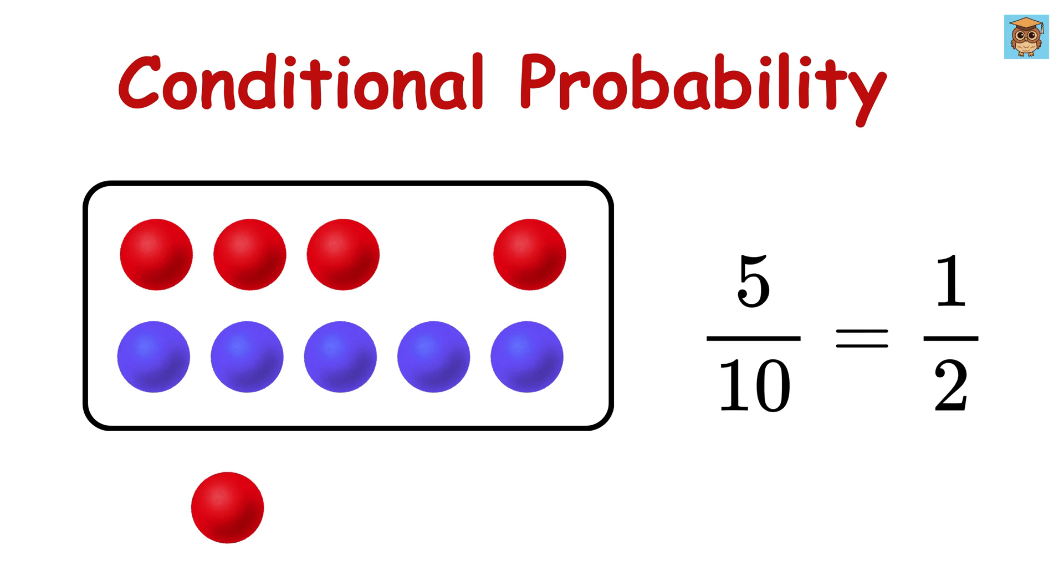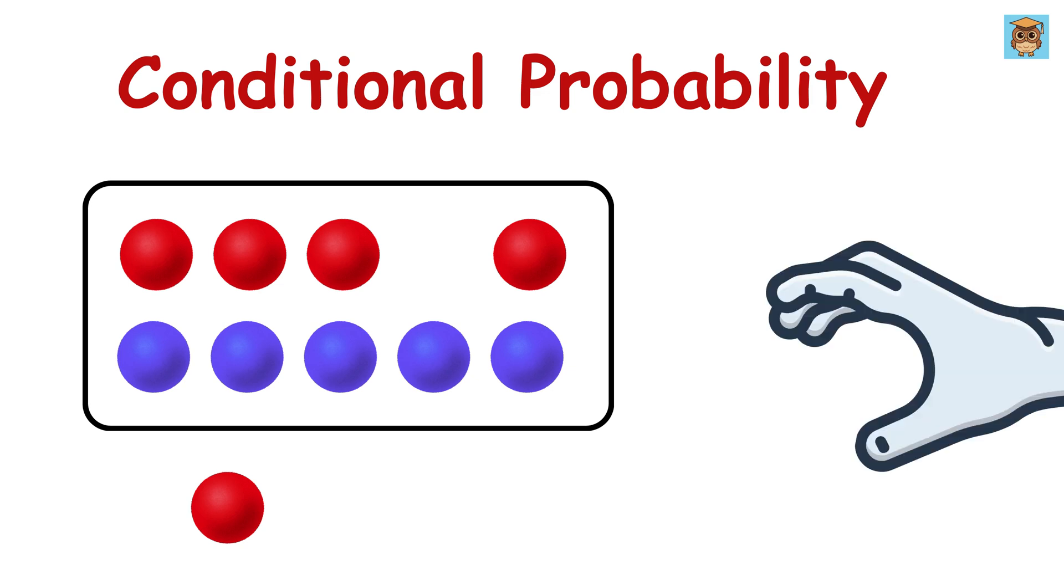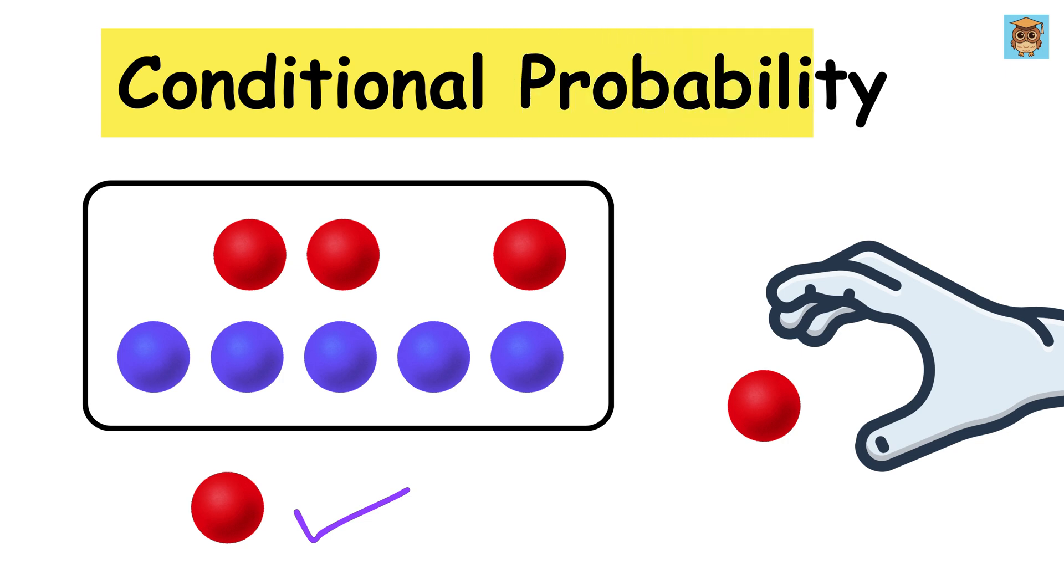Now without putting it back, you pick another ball. What's the probability this next ball is also red? It's no longer five out of ten because one red ball is already gone. Now there are four red balls and five blue balls left, which means nine balls in total. So your second pick depends on the first. This is conditional probability, where what happens next depends on what already happened.